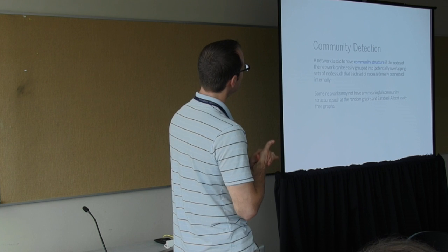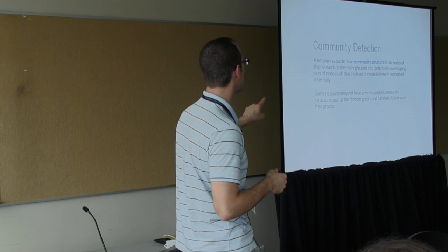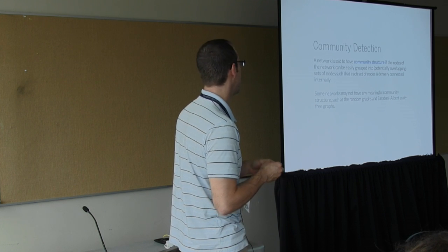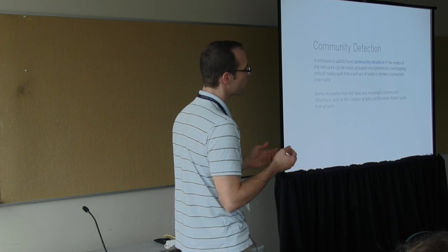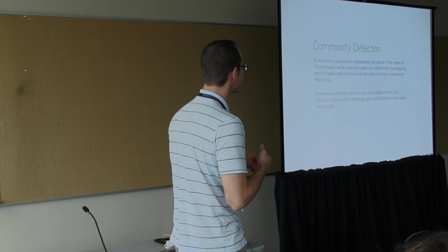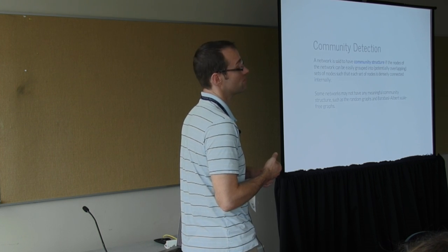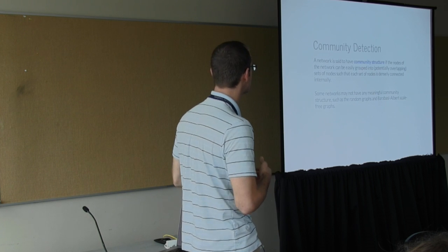So an important note here, some networks don't have meaningful community structure to it. And it's good to know that before you try applying these methods to those networks and then going, well, what the hell does this mean? Well, nothing, because you don't have those structures. So random graphs and Barabasi-Albert scale-free graphs, in that continuum, don't really have meaningful community structure to them.